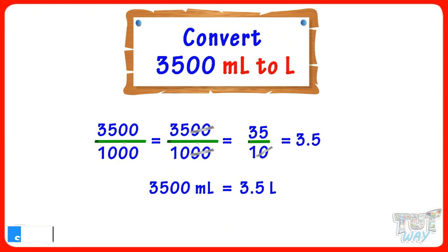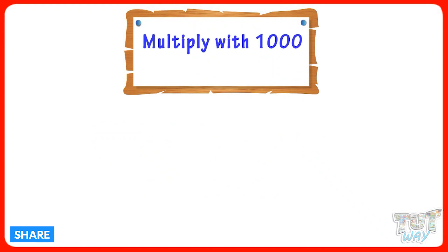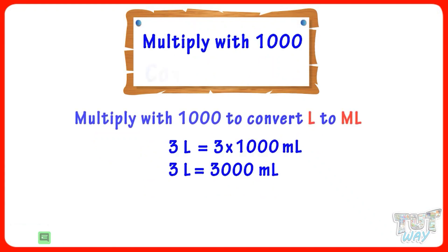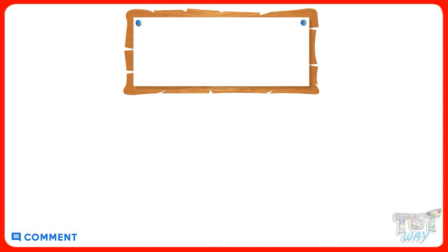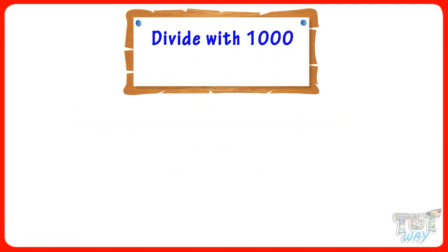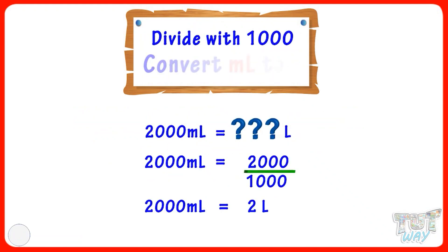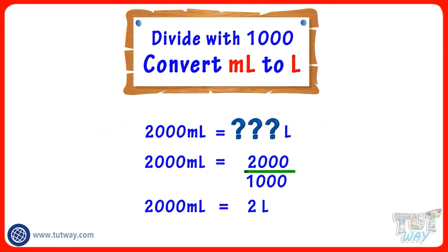So we multiply by 1000 if we want to convert liters to milliliters, and we divide by 1000 if we want to convert milliliters to liters.